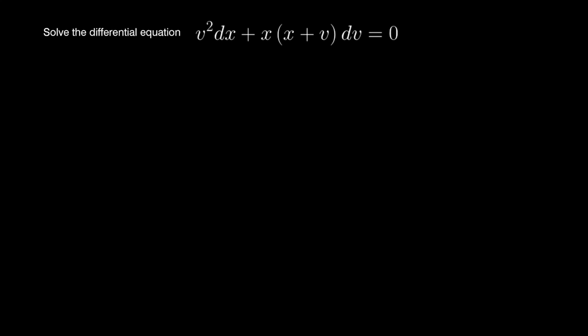Solve the differential equation v² dx + x(x + v) dv = 0. To solve equations like this, we introduce another variable and substitute it into the original equation, which will lead us to a new equation that is separable, and then we can solve that by separation of variables.